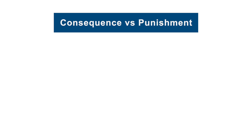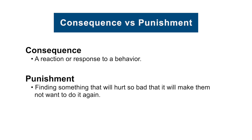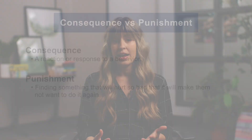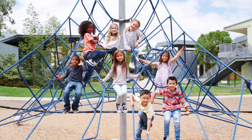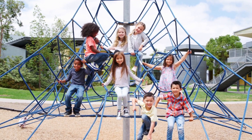Oftentimes we conflate consequence with punishment. Consequence is a reaction or response to a behavior. Punishment is finding something that will hurt so bad that it will make them not want to do it again — but they aren't understanding why, they're just trying to avoid the consequence. If we are helping to raise young people to become functioning adults, they need to understand how they and their choices are connected to the bigger world around them.